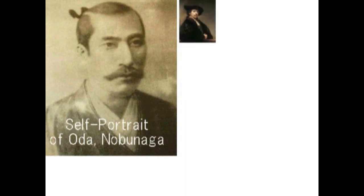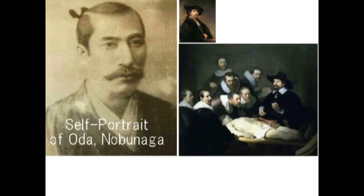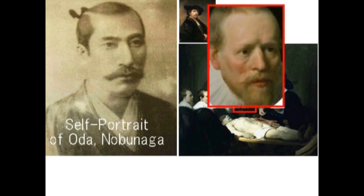Rembrandt van Rijn. The picture is Rembrandt's painting of Dr. Tulp's Anatomy Lesson. 赤枠で囲った人物に注意してください。この人物と、左の織田信長の絵の描き方がよく似ているのがわかります。